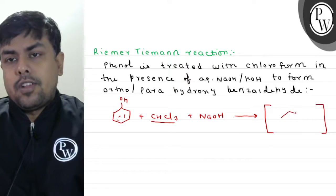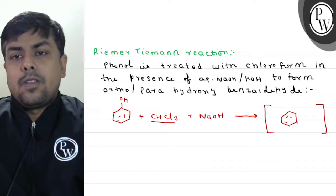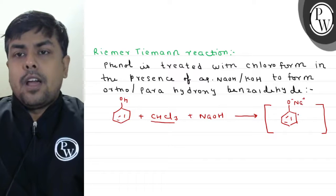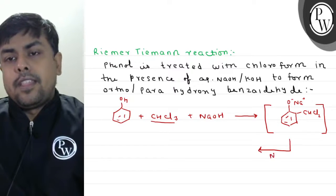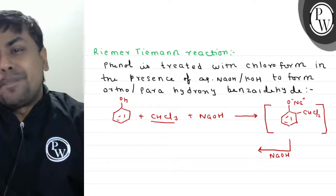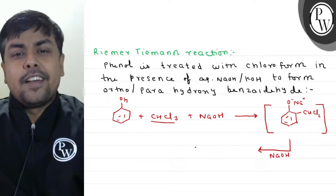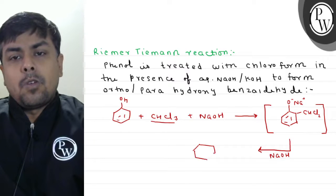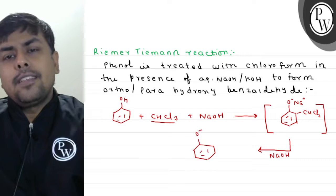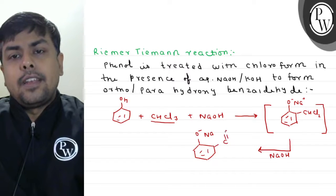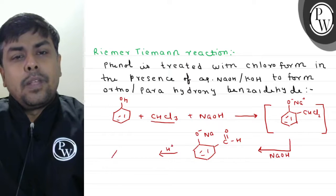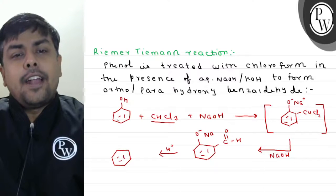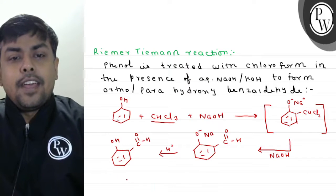The intermediate structure is something like this: O⁻Na⁺ with C-HCl₂ attached. This intermediate on further treatment with NaOH undergoes alkaline hydrolysis. Both chlorine atoms are replaced, and we get ortho hydroxybenzaldehyde with O⁻Na⁺ and C=O-H.